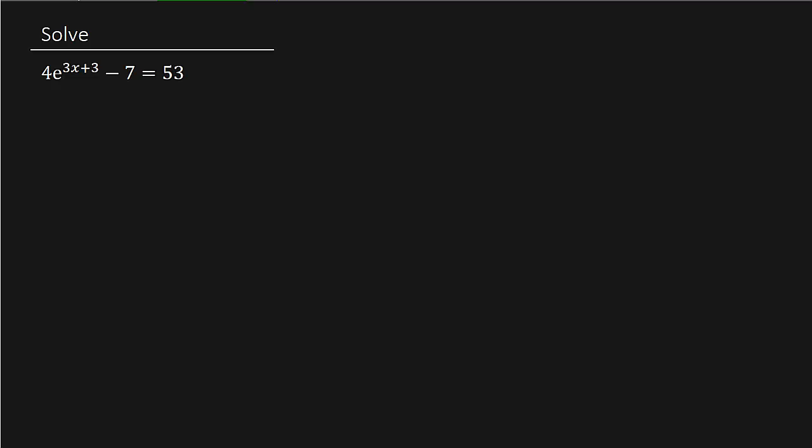So first thing we want to do is we want to get the e raised to the power, that e raised to the 3x plus 3, we want to get that by itself. So we're going to add 7 to both sides. That's going to give us 4e to the 3x plus 3 equals 60.